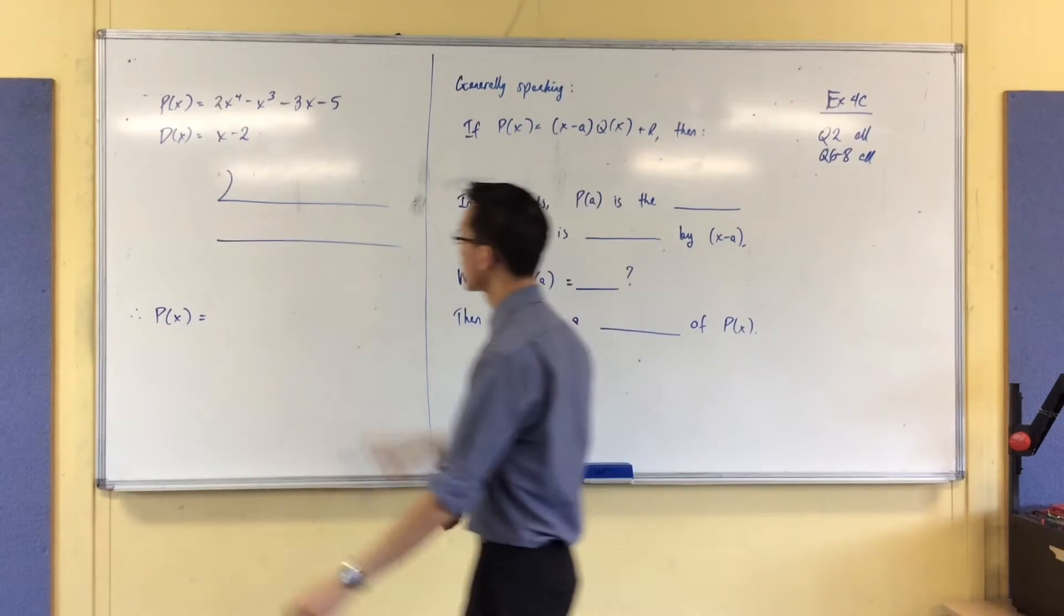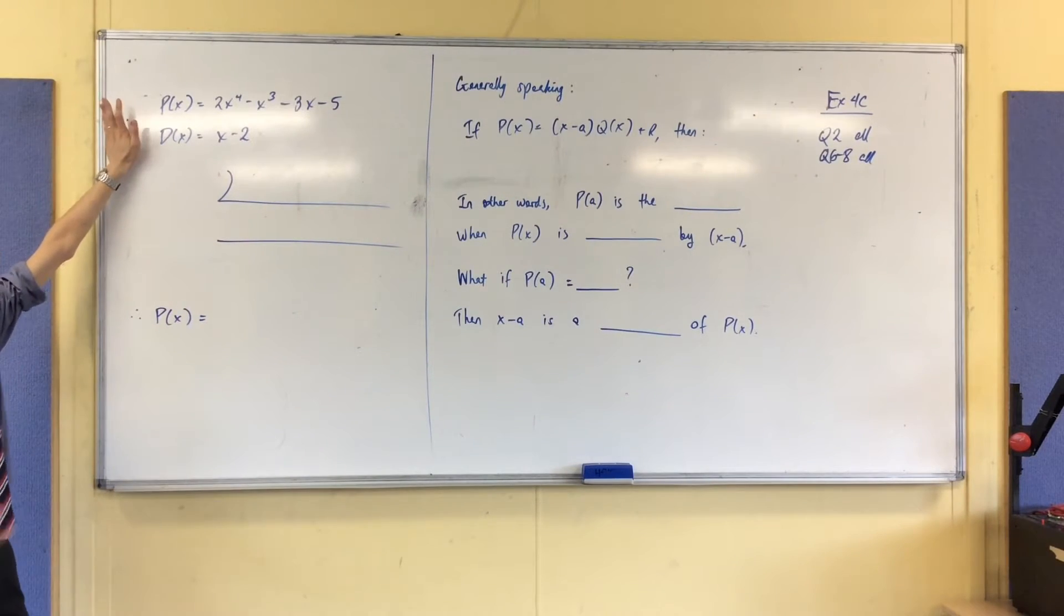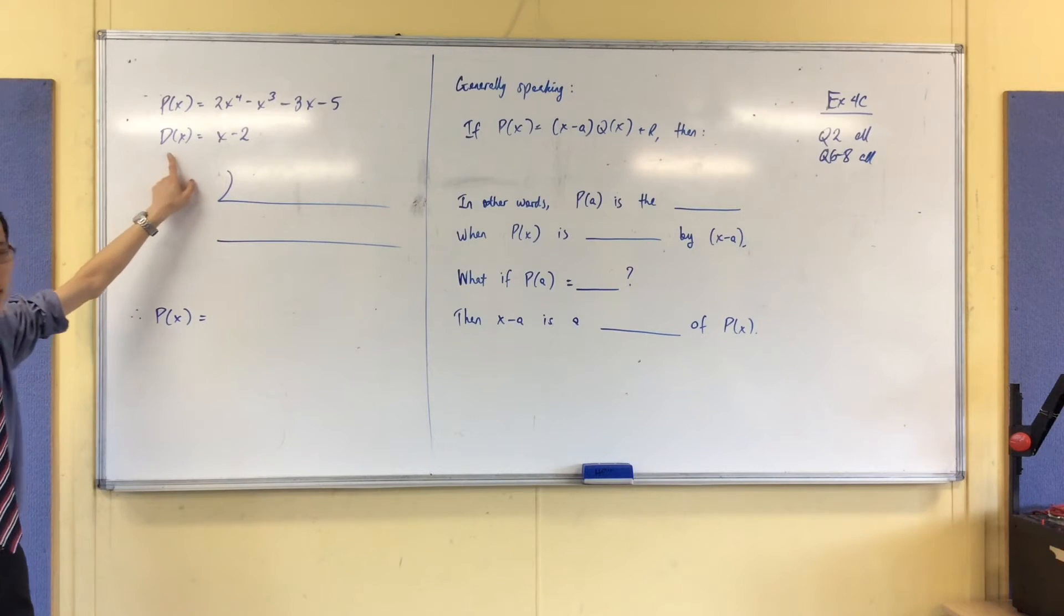So let's do the division first. There are my two bits: the polynomial I'm going to divide by, which is really the dividend. This is what I'm dividing by, the divisor, so that's why I call it D.